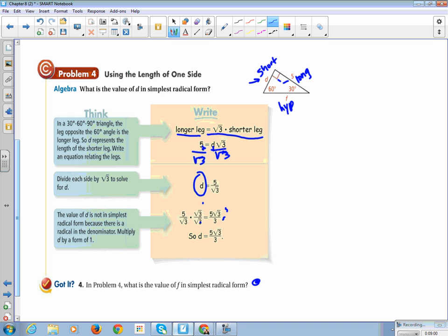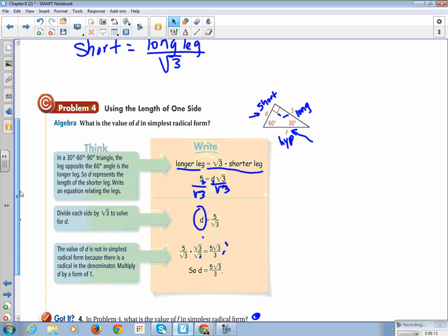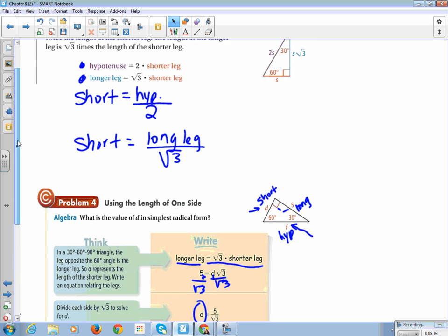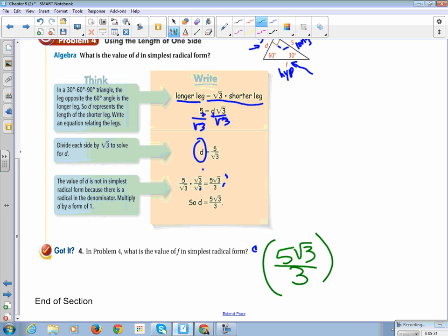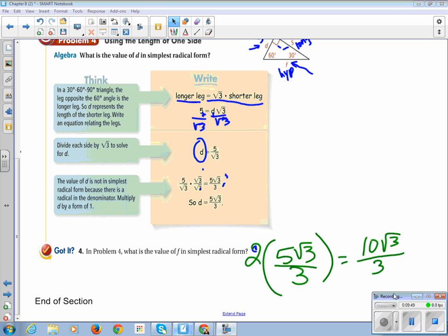Let's look at this little got it problem here. In problem 4, what is the value of F? In simplest radical form, so if we go to our, holding the pen. So, F is our hypotenuse. Hypotenuse is 2 times the shorter leg. We take the value of the shorter leg. Just regular 5. And we multiply it by 2. So, that gives me 10 root 3 over 3. 3 doesn't go into 10, so I can't simplify that down. And that's the end of our information from this group.